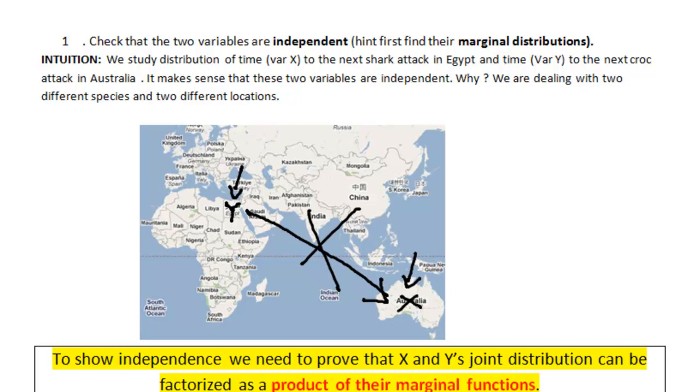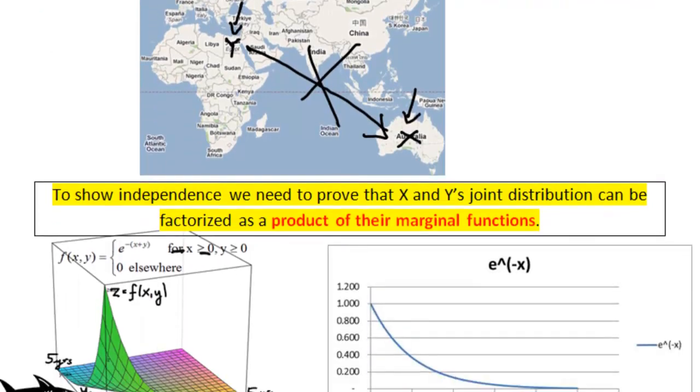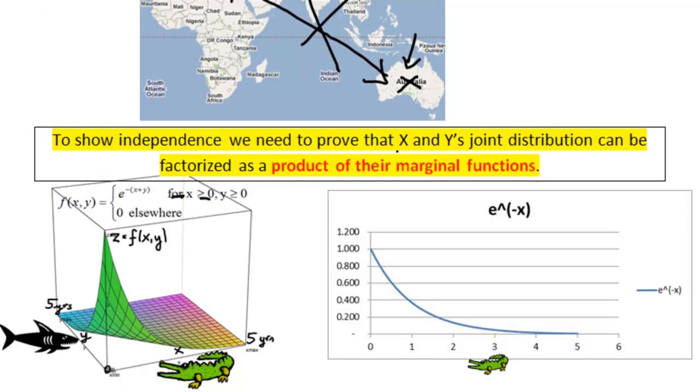Of course, to prove independence mathematically, we need to prove that X and Y's joint distribution can be factorized as a product of their marginal functions.